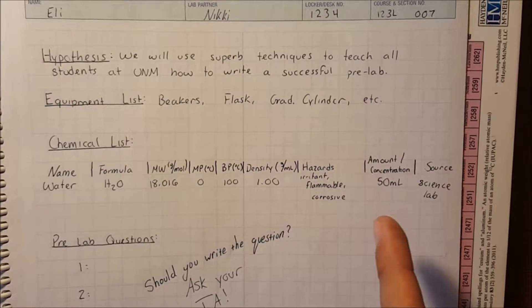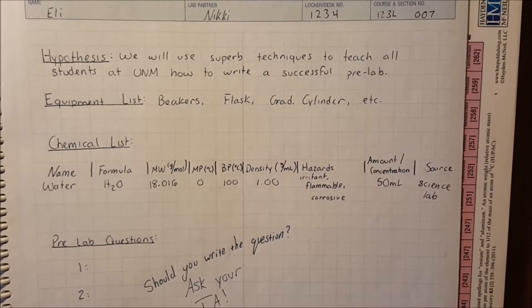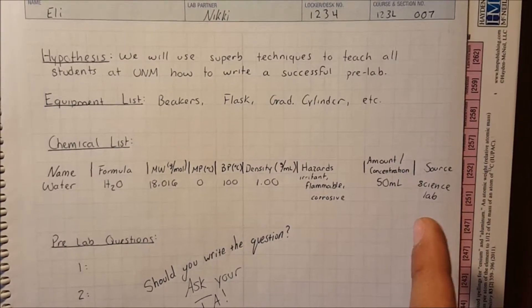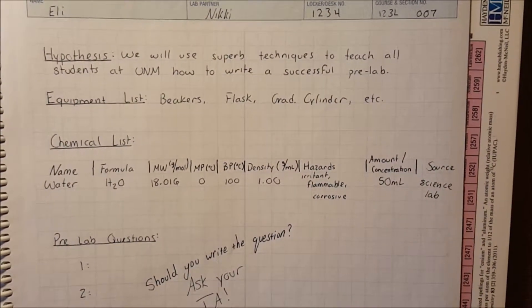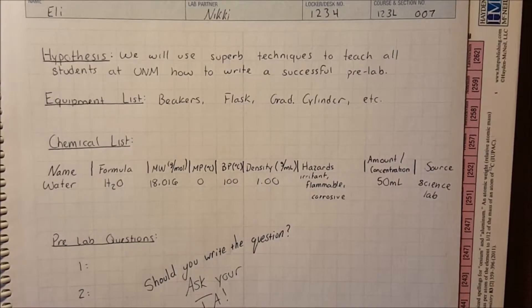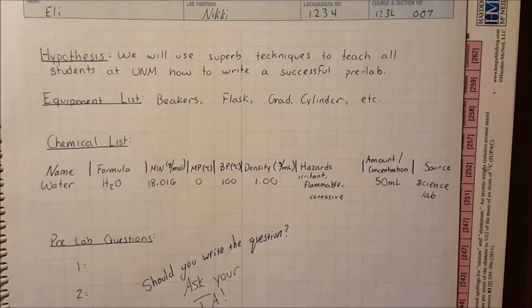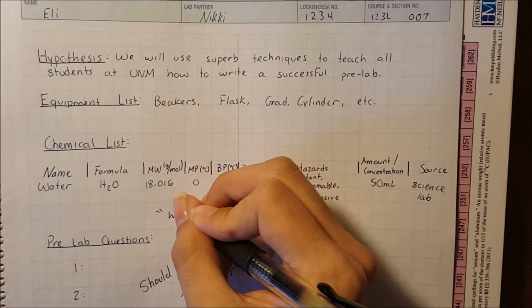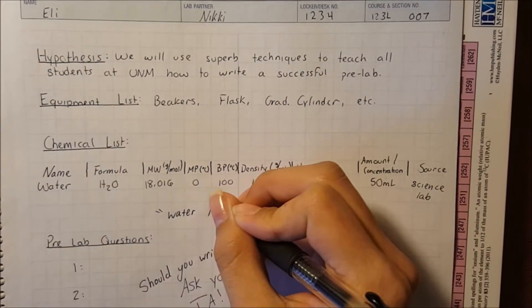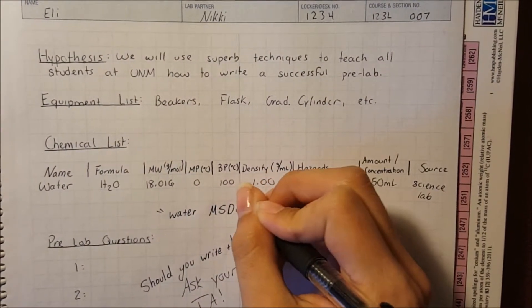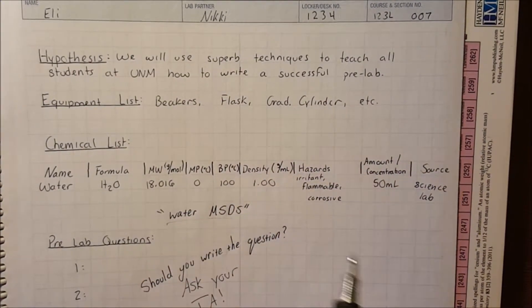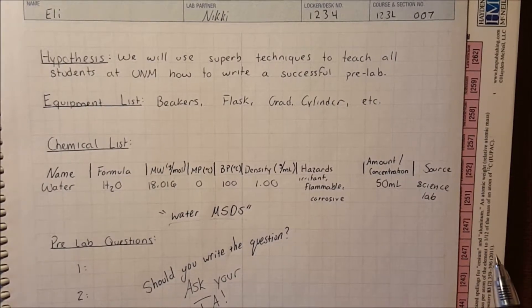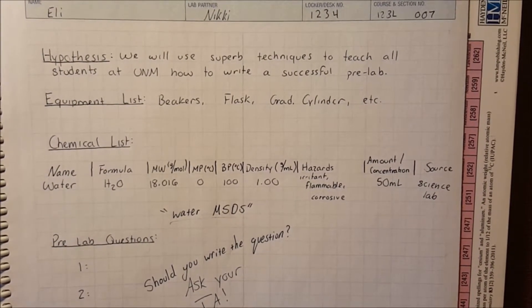Amount or concentration that you're going to use in the experiment, and the source where you found all of the information. To find this information, you will go to your search engine of choice and type in whatever chemical you're looking for and MSDS. This will give you all of this information. The one that will usually pop up is Science Lab, that's a good one, but another source would be Sigma Aldrich.